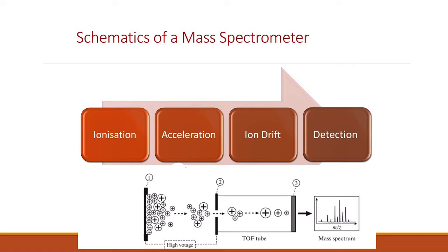There are four stages. The first is ionization, where all the atoms or molecules change from being neutral to being positively charged. The second stage is acceleration, where the different ions are accelerated through an electric field and gain kinetic energy. The third stage is ionic drift, where the different ions move at different speeds and are separated based on their mass. The final stage is detection, where the ions reach the detector at different speeds and times, and a mass spectrum is generated.